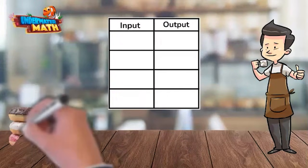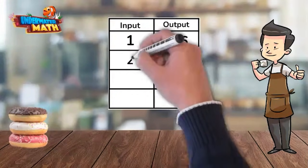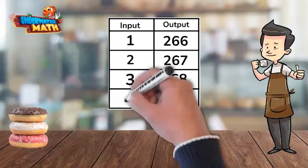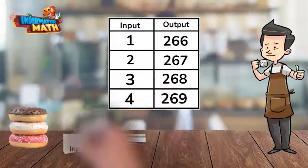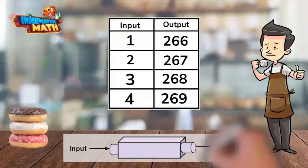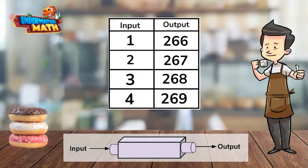One more example for you today. We need to figure out the rule between the input and output to get our pile of free donuts. Imagine you can put numbers from this table through an input-output machine. You can put an input number through the machine, a rule applies, and it comes out the output with a new value.